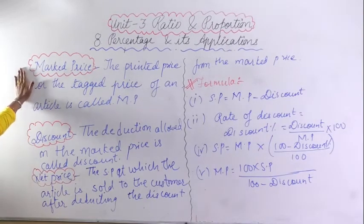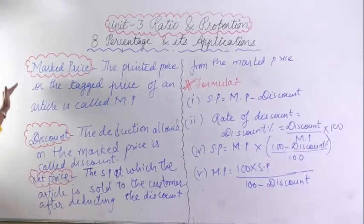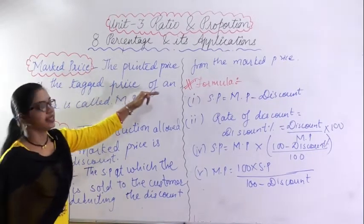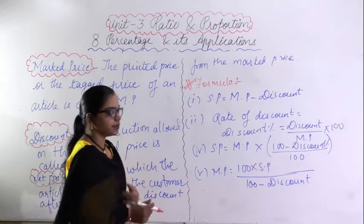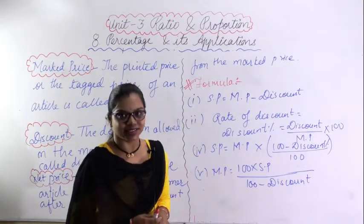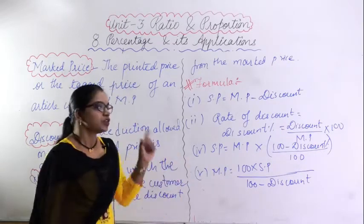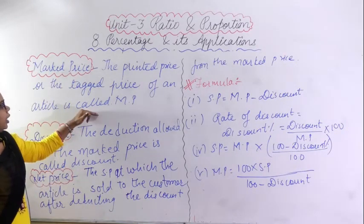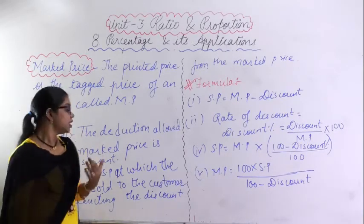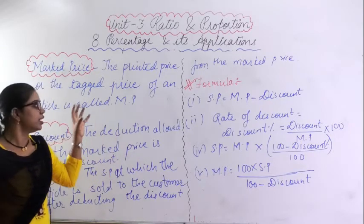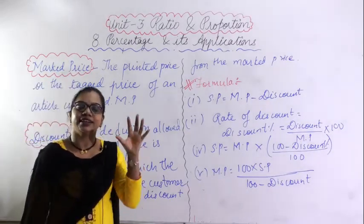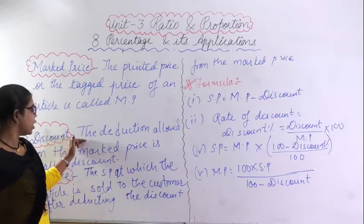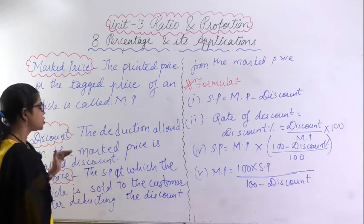The next topic is mark price, discount, and net price. The printed price or tagged price of an article is called the mark price. Suppose you went to Big Bazaar and purchased a jeans — the price written on the tag or label is the mark price or tag price. Now, discount is the deduction allowed on the mark price.